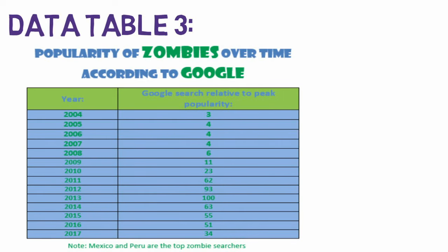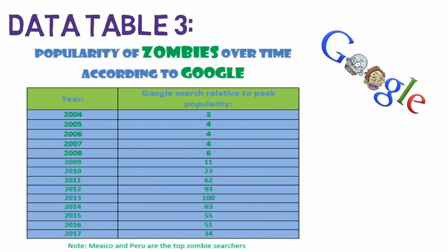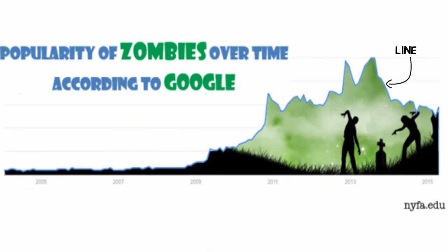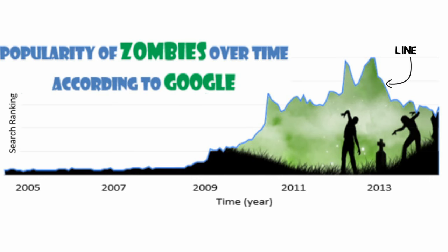Let's look at a third example: the popularity of zombies over time, according to Google searches. This Google data ranks zombie searches over the last few years compared to the peak year of zombie searching, which was in 2013. It's also interesting to note that Mexico and Peru are the top searchers for zombies. Since there's one variable divided up — time — the best type of graph to use for this data would be a line graph, where time is on the x-axis and the search ranking is on the vertical y-axis.